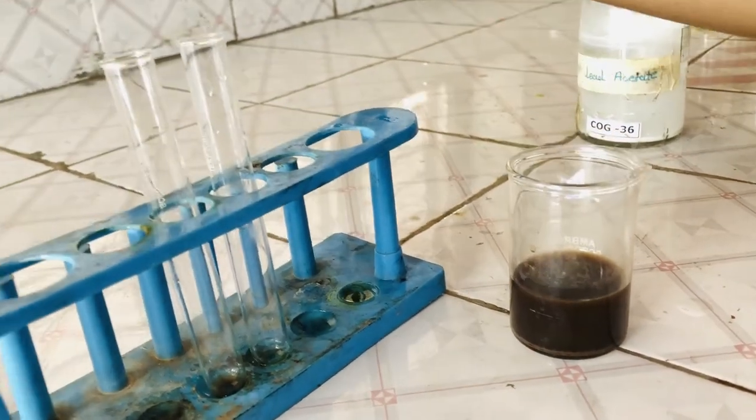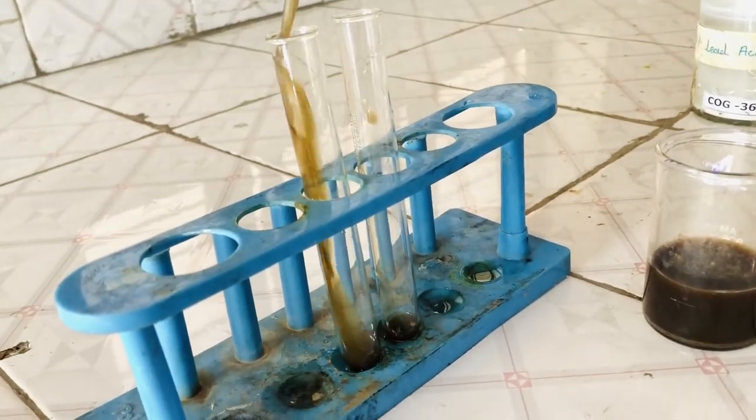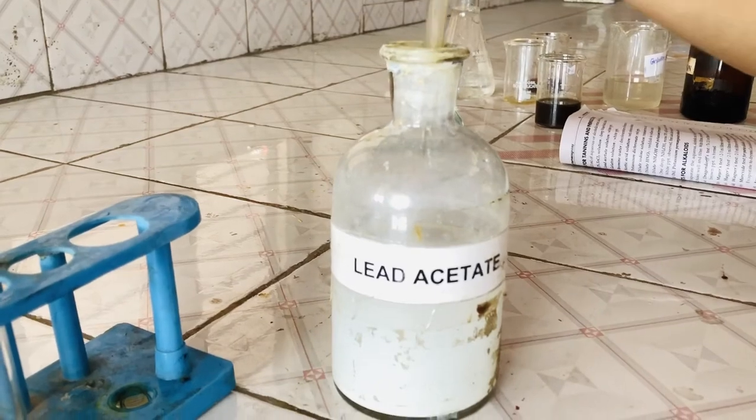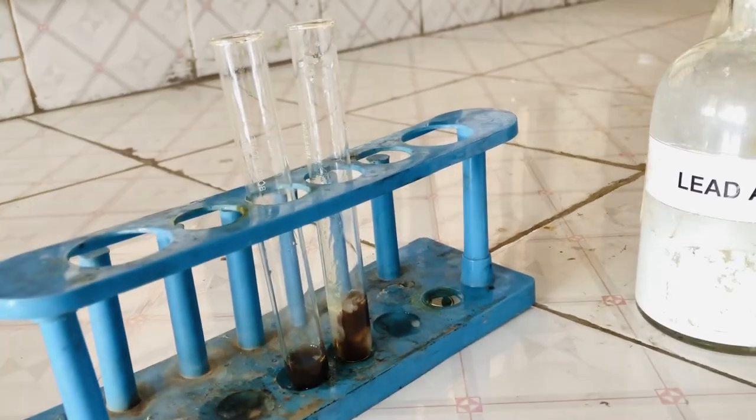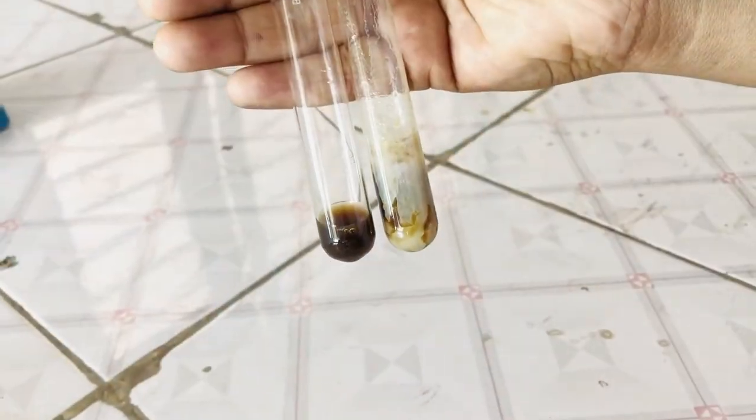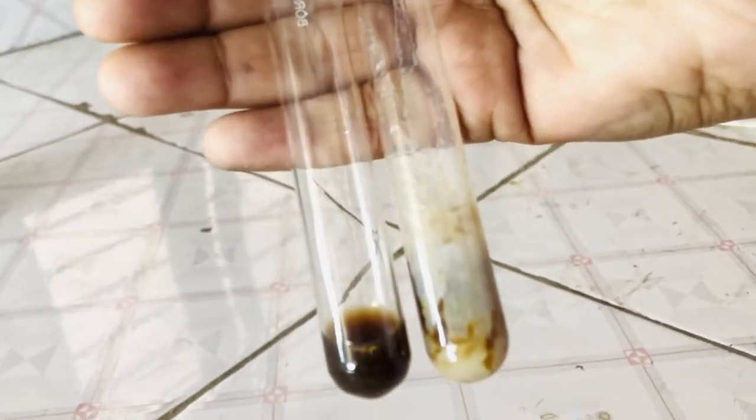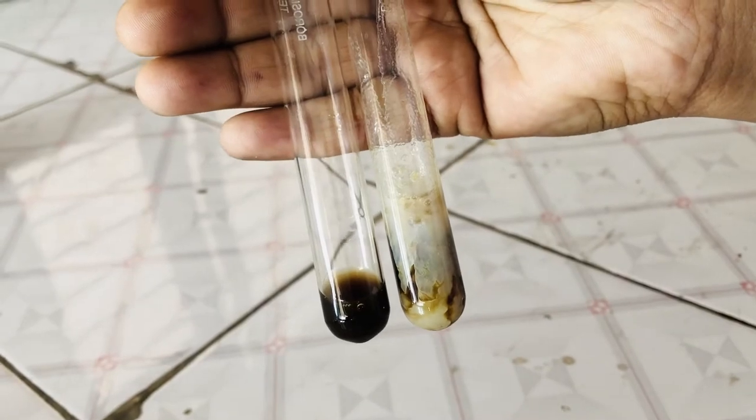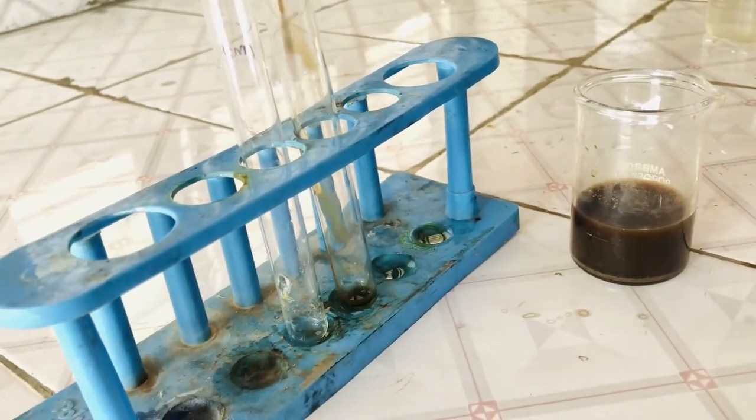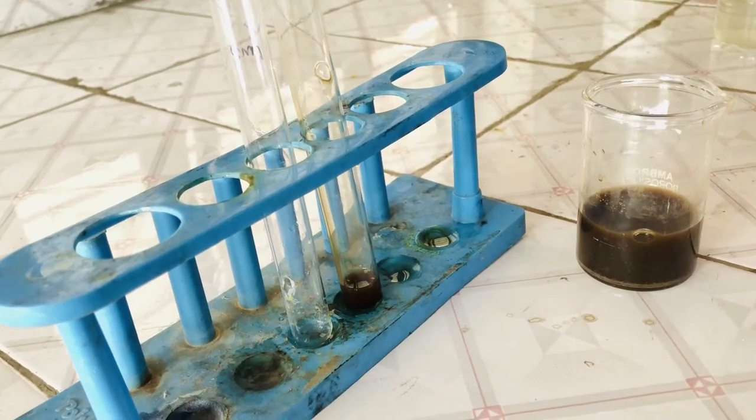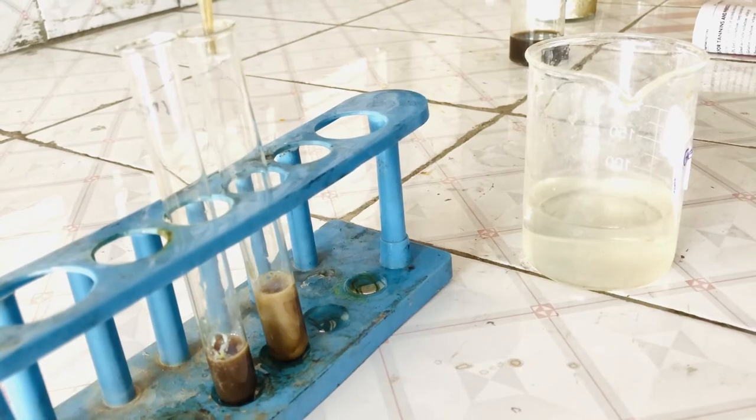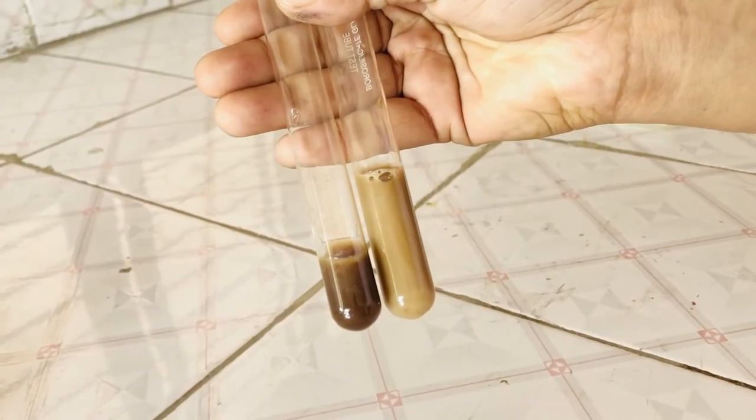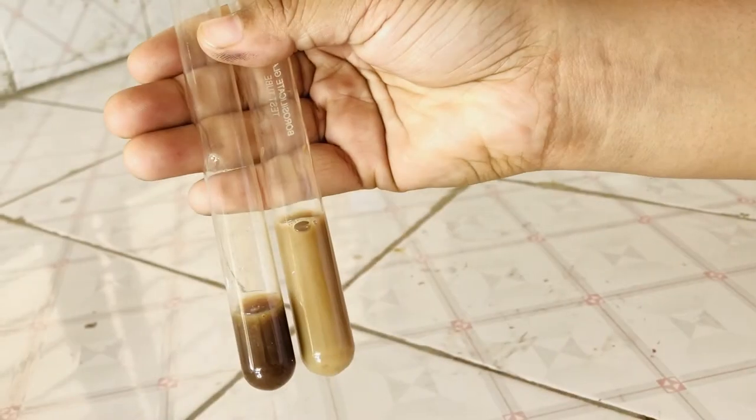Again we are preparing test and standard solution by adding equal amounts. Now we will add lead acetate to the test solution. You can see the white precipitates of gelatin have appeared because of the tannin amla. This test confirms the gelatin test.